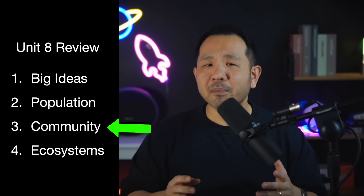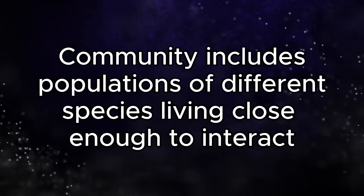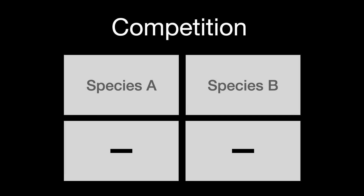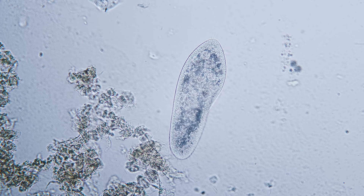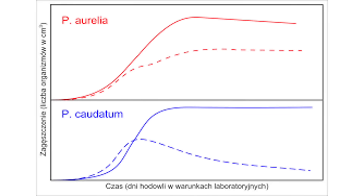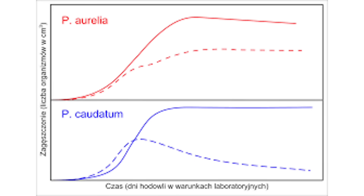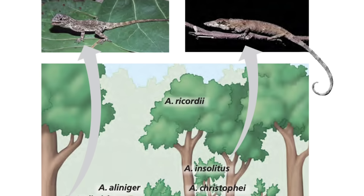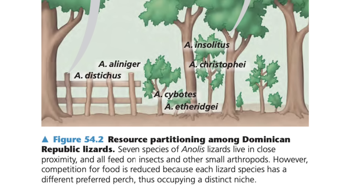Let's move on to community ecology, which probably carries the greatest weight on the AP exam. A community is a population of different species living close enough to interact. Competition is a minus-minus interaction when two different species coexist while competing for the same set of resources. These species are said to have overlapping niches, and in many cases we observe competitive exclusion, wherein the less competitive species goes locally extinct. This is important to keep in mind when you see two population graphs doing well independently but both struggling when grown together. There is also niche partitioning, which occurs when two competing species evolve to occupy the polar ends of their respective niches to avoid competition, leading to the two species coexisting while specializing into their own niches.